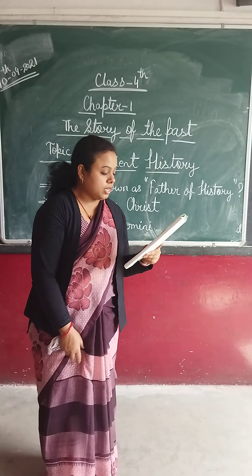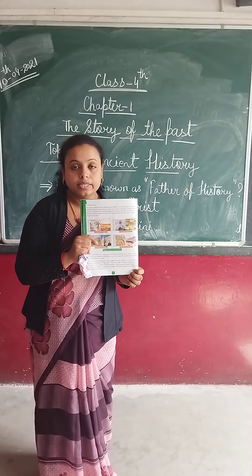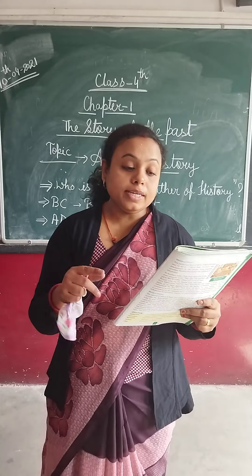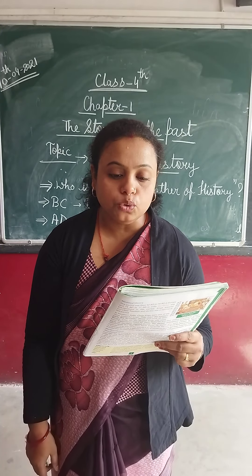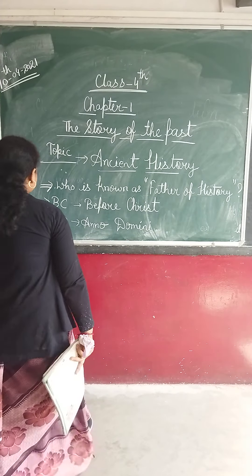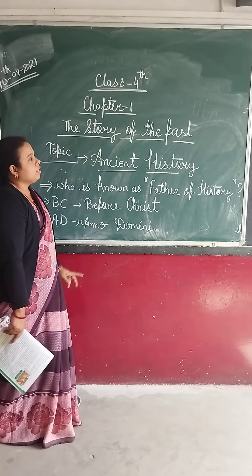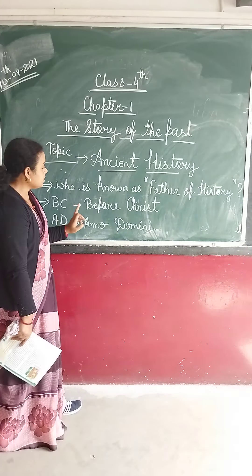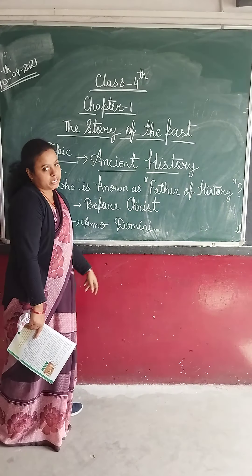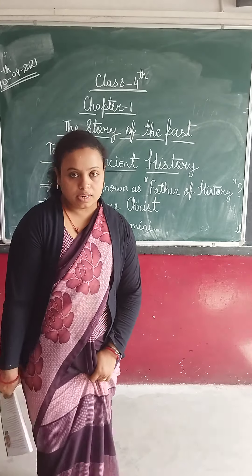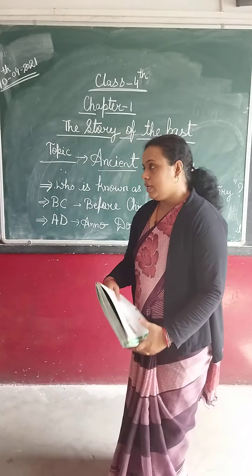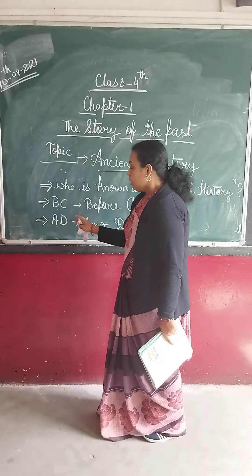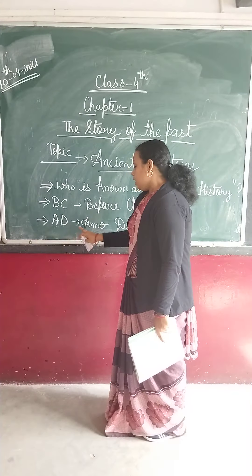Ancient history — you can see in your book, page number 8. The period of ancient history dates back from 2500 BC to the 1st century AD. But before starting this point, you should know the full form of BC and AD. The full form of BC is 'Before Christ' and AD is 'Anno Domini'. Please write this down in your copy.